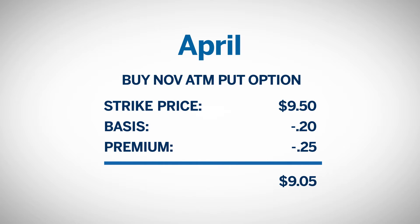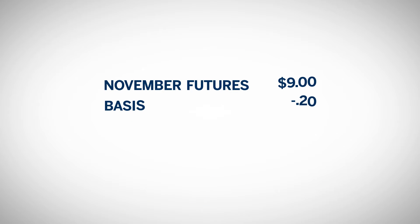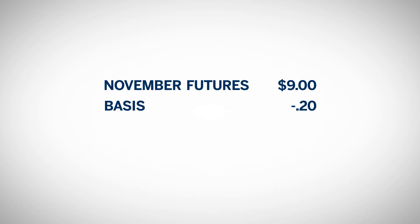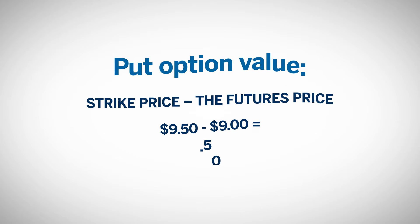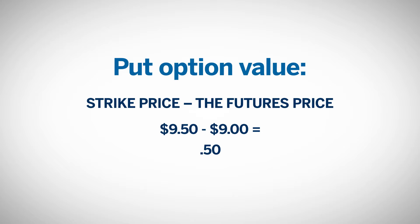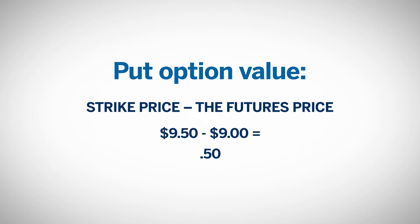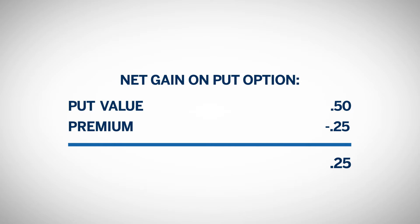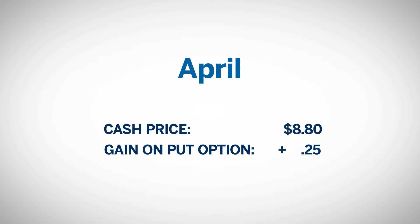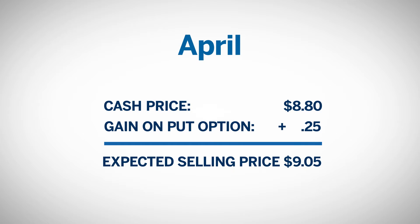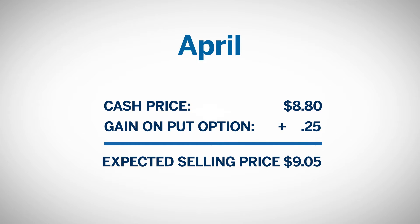If soybean prices fall, this is the minimum price he will receive. For instance, suppose the November soybean futures price falls to $9, which would mean a cash price of $8.80 — the futures price minus the expected $0.20 under basis. Since the put option gives the farmer the right to sell at $9.50, even though soybean futures are at $9, the put option has a value of at least $0.50. Deducting the $0.25 premium gives the farmer a net gain of $0.25 on his put option hedge. The cash price of $8.80 plus the $0.25 gain provides the farmer with an effective selling price of $9.05 per bushel. No matter how low soybean prices fall by the time he sells his beans in November, assuming the basis is stable, the lowest price he will get is $9.05.